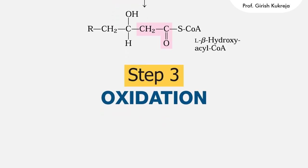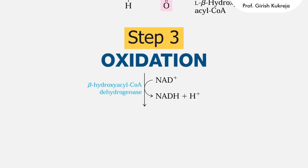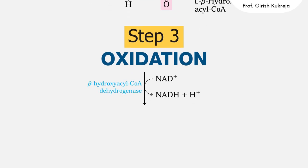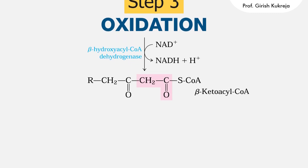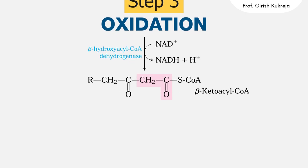Step three is again oxidation or dehydrogenation. Here the beta hydroxyacyl-CoA is dehydrogenated by beta hydroxyacyl-CoA dehydrogenase with NAD plus as the electron acceptor to form beta ketoacyl-CoA. NADH then transfers its electron to NADH dehydrogenase of mitochondrial respiratory chain.